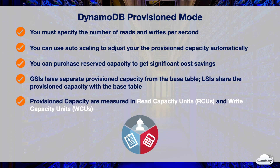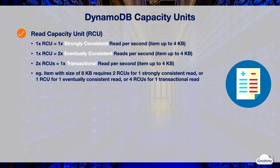Provisioned capacity is measured in Read Capacity Units (RCUs) and Write Capacity Units (WCUs). One RCU gives you one strongly consistent read per second, or two eventually consistent reads per second, for each item up to 4 KB in size. The total number of RCUs doubles when you perform transactional reads — two RCUs give you one transactional read for items up to 4 KB. For example, if an item size is 8 KB, you need two RCUs for a strongly consistent read, one RCU for an eventually consistent read, or four RCUs for a transactional read.